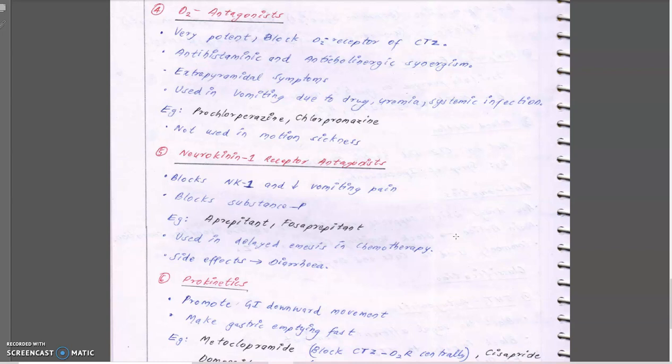Now we move to D2 antagonists. The dopamine receptor present on the CTZ mainly acts as a vomiting-inducing receptor, so D2 antagonism leads to anti-vomiting or anti-emetic action. There is also antihistaminic and anticholinergic synergism, but they can cause extrapyramidal symptoms. They are used in drug-induced vomiting or any systemic infection that leads to vomiting.